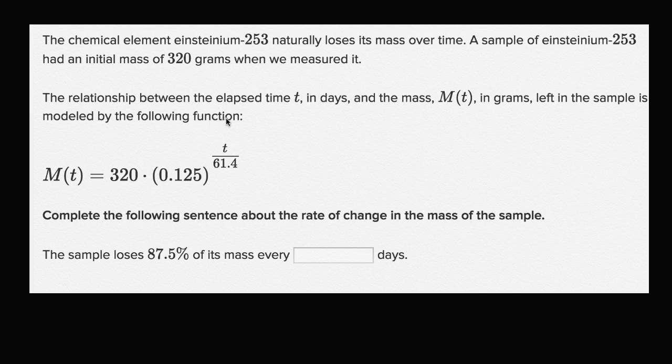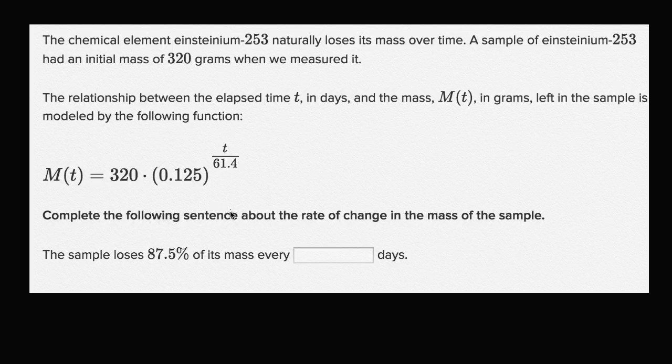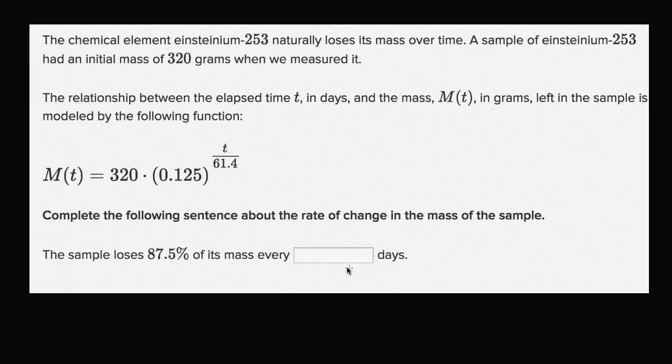The relationship between the elapsed time t in days and the mass m of t in grams left in the sample is modeled by the following function. Complete the following sentence about the rate of change in the mass sample. The sample loses 87.5% of its mass every blank days.